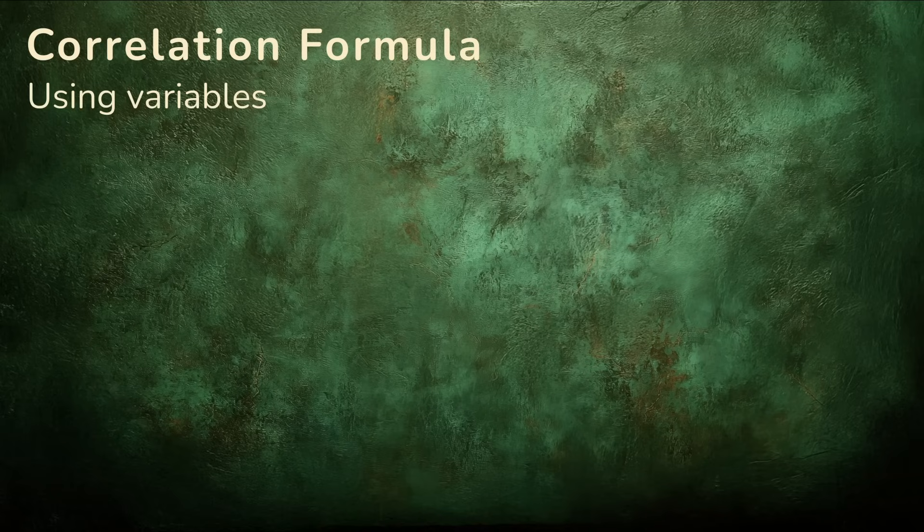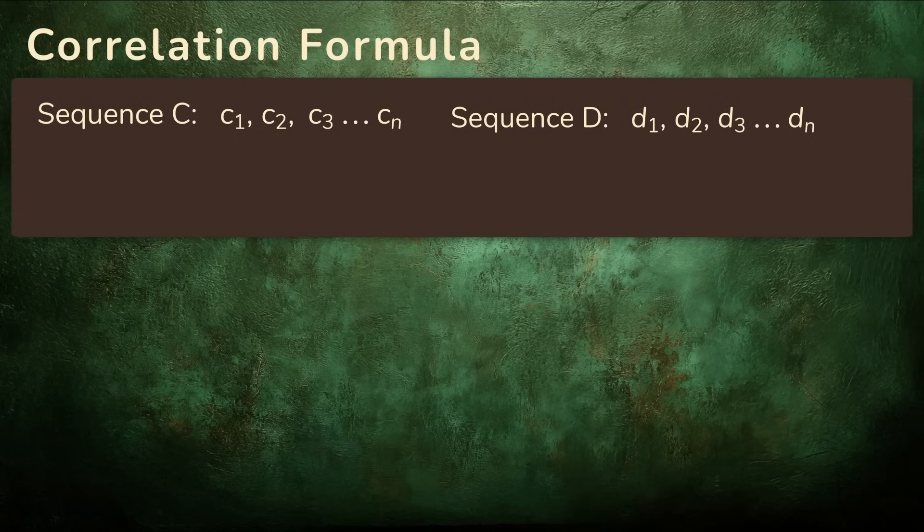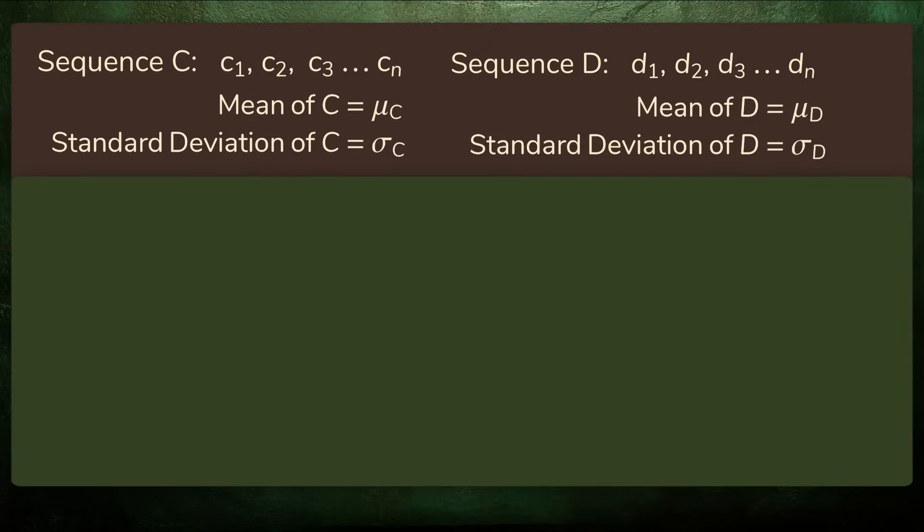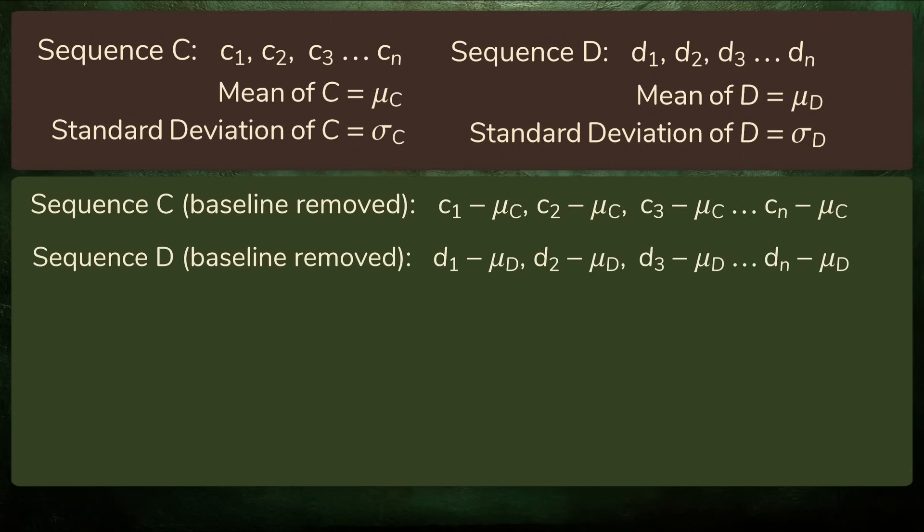Can we generalize for any two sequences? We can and we will. Let's repeat the above calculation except using variables instead of numbers. Suppose we have two sequences of numbers, we'll call them C and D. Like before, we want to calculate how strongly these two sequences move together. Each collection of numbers has a mean and a standard deviation. As before, to remove the baseline, we subtract the corresponding mean from each number in the two sequences.